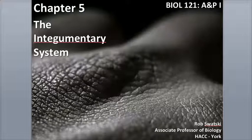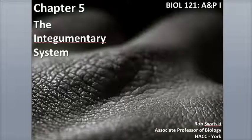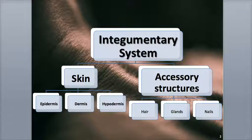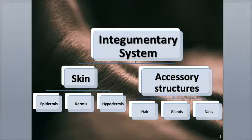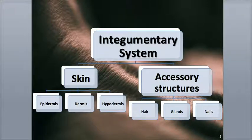Hello, everybody. This is Rob Swatsky, and in this podcast, I'll be starting Chapter 5 on the Integumentary System. The Integumentary System is an organ system that covers the external body. It's made up primarily of the skin, but also includes a variety of accessory structures, such as the hair, the various glands — such as oil glands and sweat glands — and the nails, including the fingernails and toenails.